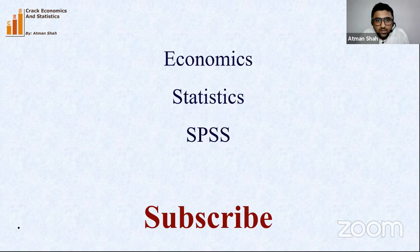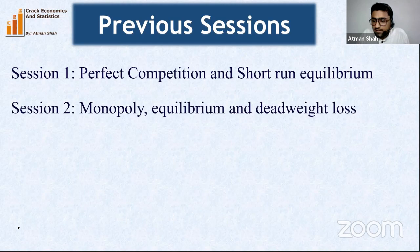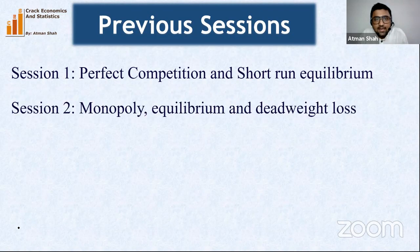In previous sessions we discussed perfect competition and short-run equilibrium — how a perfectly competitive firm achieves equilibrium, the equilibrium conditions. In the second session we discussed the characteristics of monopoly, how a monopolist achieves equilibrium in the short run, including abnormal profit and loss and the idea of deadweight loss — the social cost of monopoly. If you missed those sessions, you can find the videos on our YouTube channel.